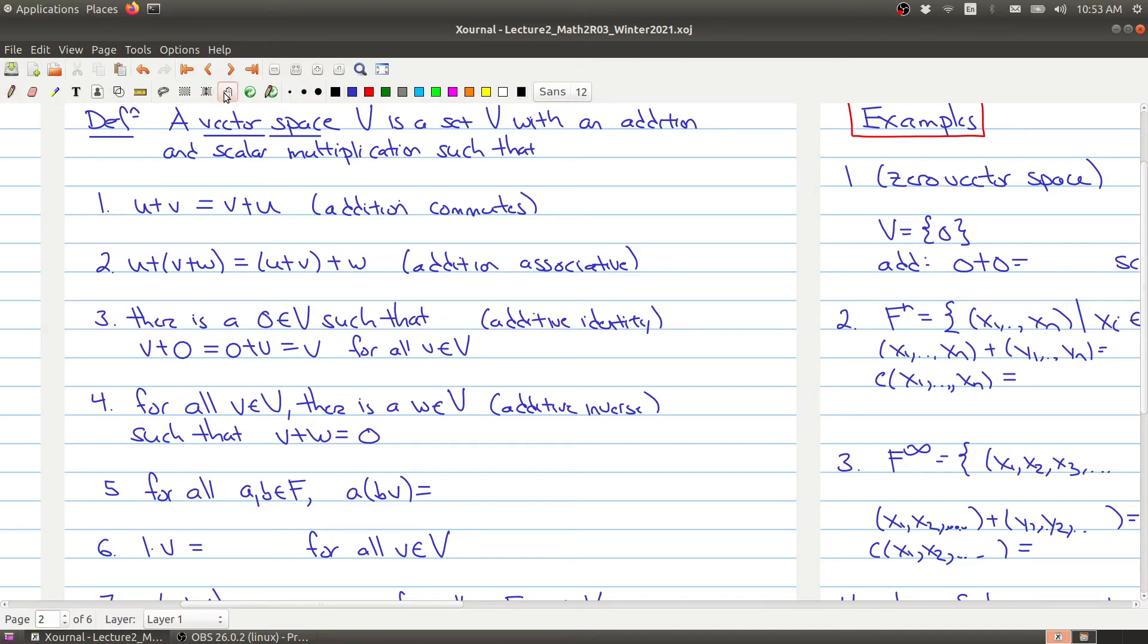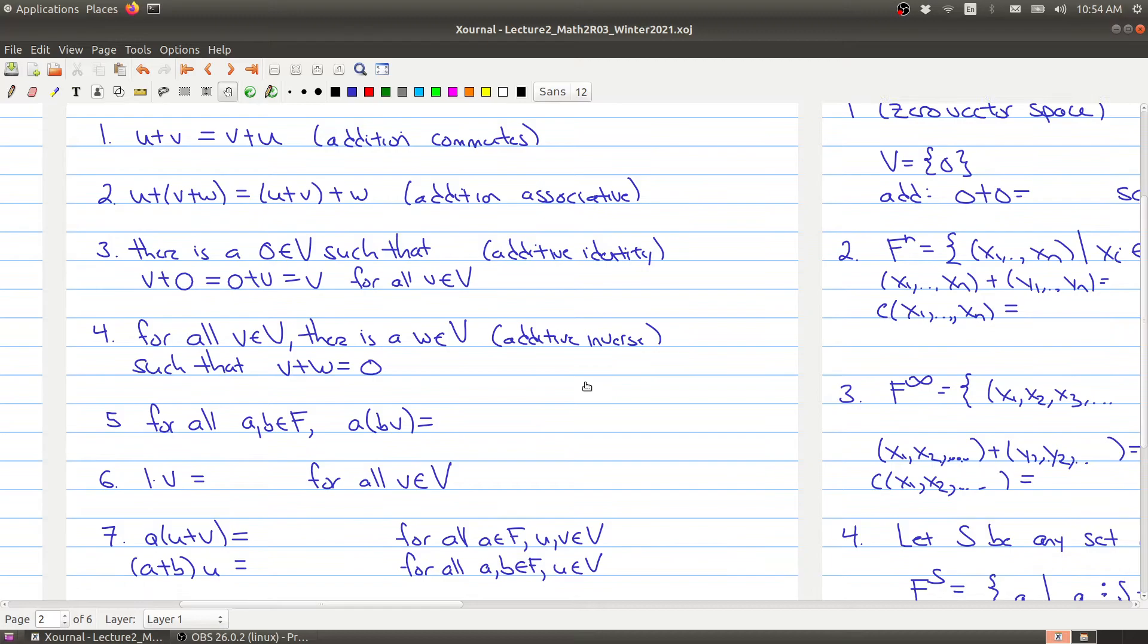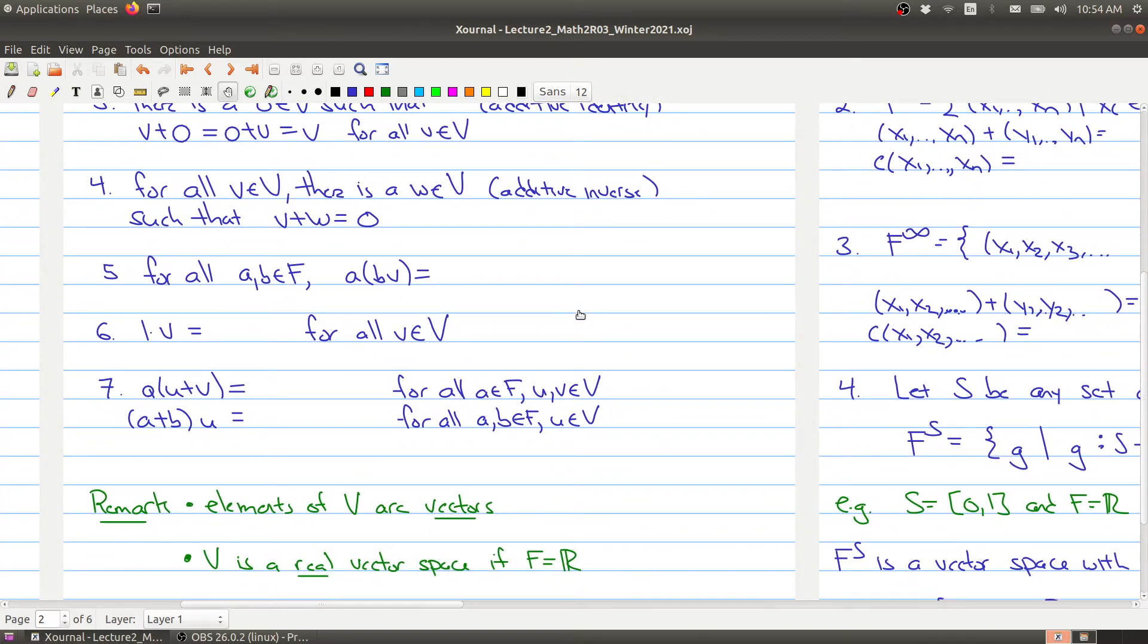Properties one through four describe properties of addition. Now we want to talk a little bit about scalar multiplication. For scalar multiplication, we have that if I take any two constants inside of my field and I take B times my vector V and then multiply it by A, that's the same thing as first multiplying A and B together and then multiplying by my vector V. If I take the element 1 and multiply it by V, I get my vector V back, and this is true for all vectors V.